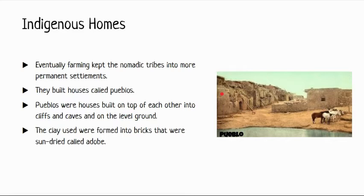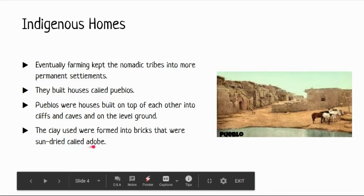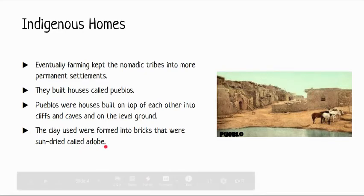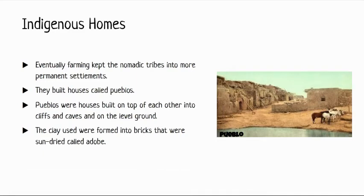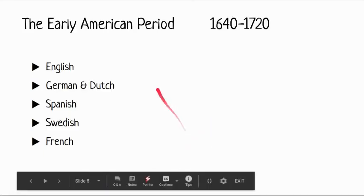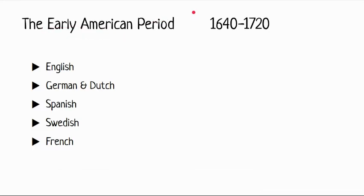Pueblos were built on top of each other, sometimes into cliffs and caves, and sometimes on level ground, using cliffs and caves as natural barriers for protection. To build them, they used sun-dried clay bricks called adobe — shaped, formed, and left to dry completely before being stacked. These are literally some of the earliest forms of construction, and some of those techniques are still used today.